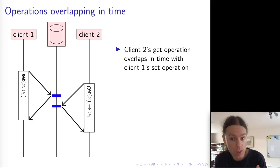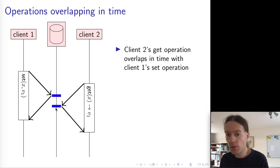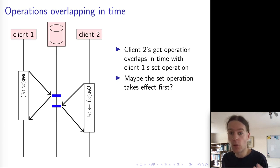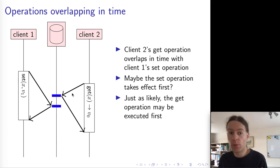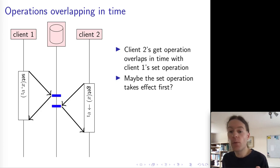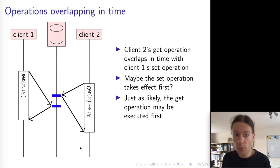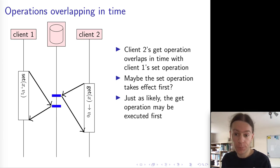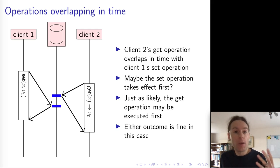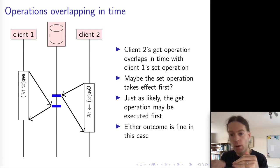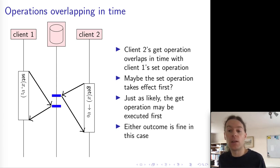If two operations overlap in real-time, they can take effect in either order. For example, a set and a get that overlap might see the set take effect first and the get return v1, or the get might take effect first — both behaviors are fine under linearizability. Linearizability only requires that the moment an operation takes effect must be somewhere within the rectangle of its duration. If two operations do not overlap in time — one finishes before the other starts — then we have the timing dependency that tells us what value must be read.